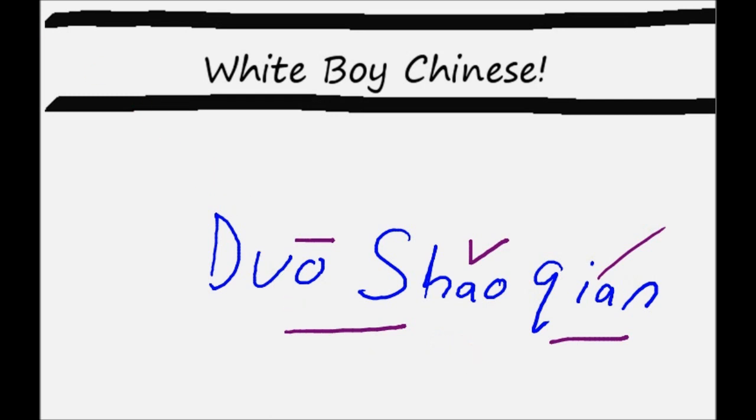So let's say that one more time. duo is the first tone. shao is the third tone. And qian is the second tone.